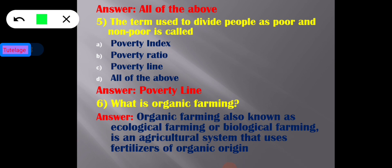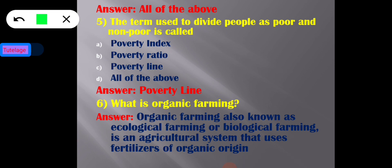The fifth question is: which term is used to divide people as poor and non-poor — poverty index, poverty ratio, poverty line, or all of the above? Option C — poverty line — is the correct answer, because the poverty line specifies the level of income that is just sufficient to maintain the basic minimum standard of living, and it differentiates the poor and non-poor.